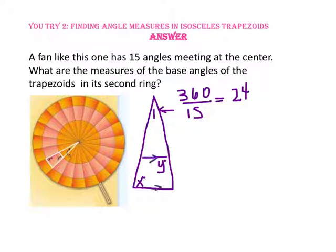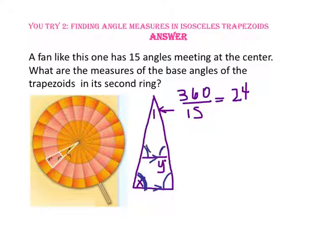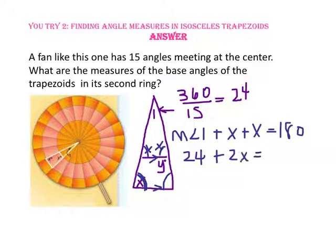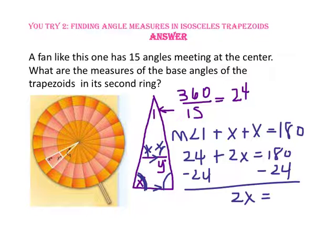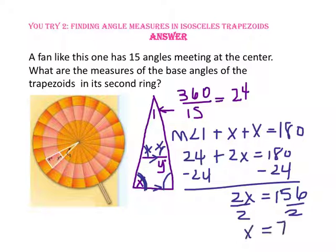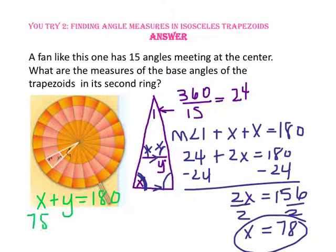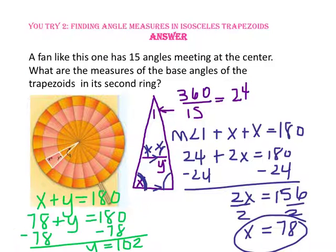Since the bases of the trapezoid are parallel, the corresponding angles are congruent, and since the base angles of an isosceles trapezoid are congruent, we can find the value of X using the triangle angle sum theorem. So 24 plus 2X equals 180. Subtracting 24, 2X equals 156, and dividing by 2, X equals 78. To find Y, since X and Y are supplementary, 78 plus Y equals 180, and subtracting 78, Y equals 102.